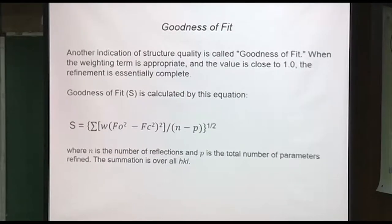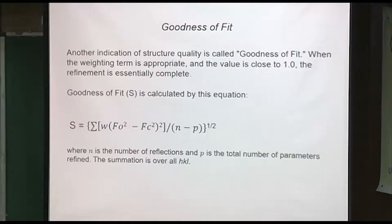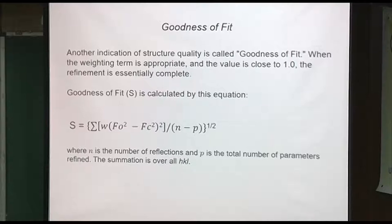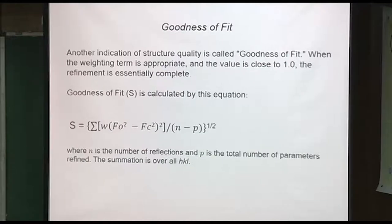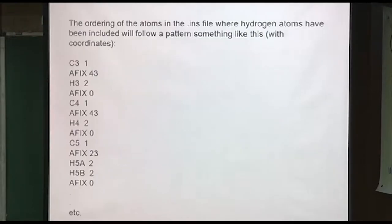Another piece of information you're often asked about is the goodness of fit. It is said that it should be close to one, but I rarely ever see it that close. What really affects it is the weight — that's a term in the formula. N is the number of reflections, P is the number of parameters. The goodness of fit looks better if you have more data than parameters. People focus an awful lot on R1, but this is also kind of the idea.